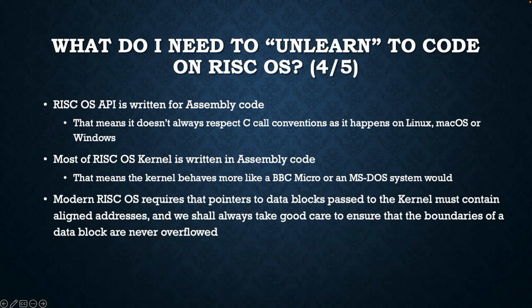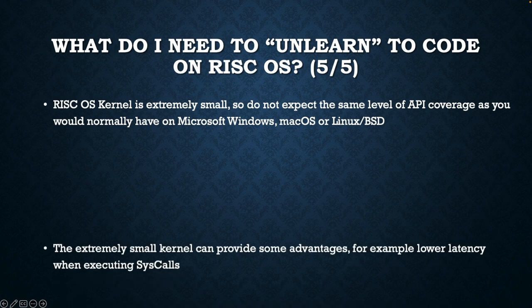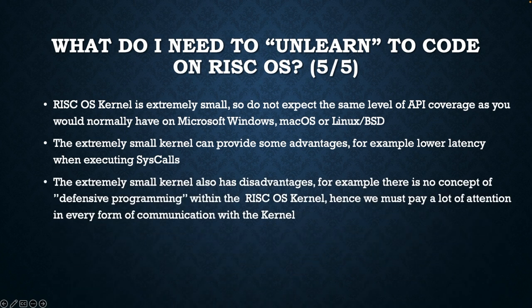Modern RISCOS requires that pointers to data blocks passed to the kernel must contain aligned addresses, and we must always take good care to ensure that the boundaries of a data block are never overflowed. The RISCOS kernel is extremely small, so do not expect the same level of API coverage as you would normally have on Microsoft Windows, macOS, Linux, or BSD. The extremely small kernel can provide some advantages, such as lower latency when executing syscalls, but also has disadvantages — there is no concept of defensive programming within the RISCOS kernel, hence we must pay a lot of attention in every form of communication with the kernel.